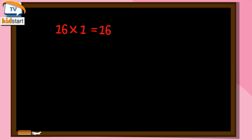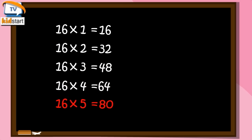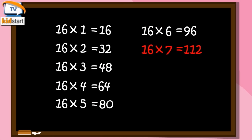Sixteen ones are sixteen. Sixteen twos are thirty-two. Sixteen threes are forty-eight. Sixteen fours are sixty-four. Sixteen fives are eighty. Sixteen sixes are ninety-six. 16 sevens are 112.